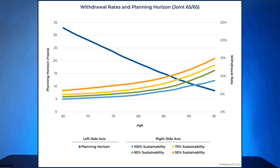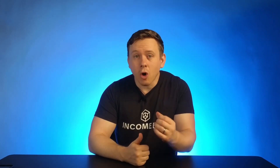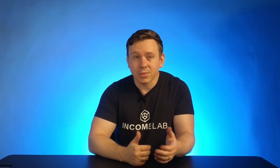One major issue with these types of distribution rate-driven strategies, however, is that a 5% distribution rate is less risky at age 90 than it is at age 65. Even more problematic in practice is that almost no one actually takes distributions from a retirement portfolio in this consistent of a fashion. Distribution rates can, and often do, fluctuate significantly in retirement.